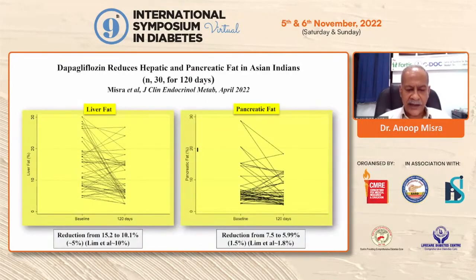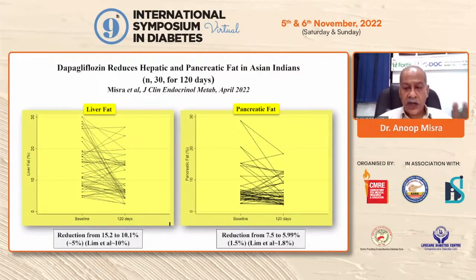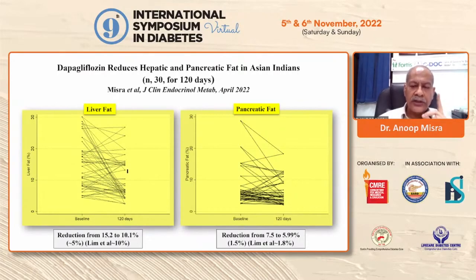More importantly, liver fat decreased markedly — a reduction from 15 to 10 percent, a 5 percent reduction (compared to 10 percent in the low-calorie diet study). Pancreatic fat decreased from 7.5 to 5.9 percent, a 1.5 percent reduction (compared to 1.8 percent in the low-calorie diet study). This is close enough to suggest reversal of diabetes could be possible using drugs.